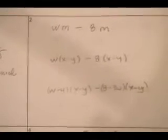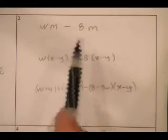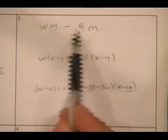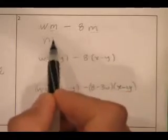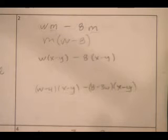Let's just do a little review of just regular old factoring. If you look at this, wm minus 8m, you'll say I noticed there's an m in both terms. I'm going to take that m out and rewrite this as m(w - 8).